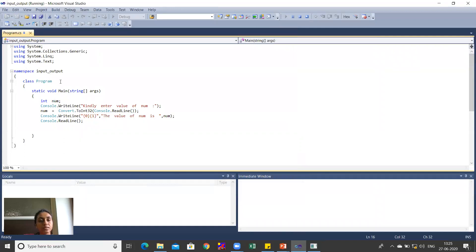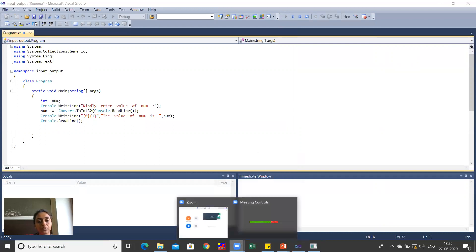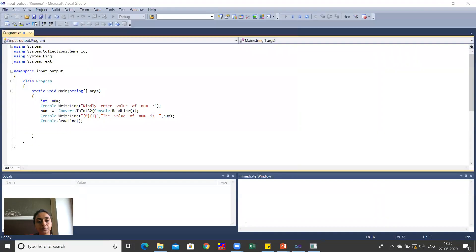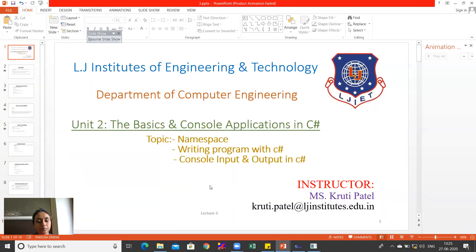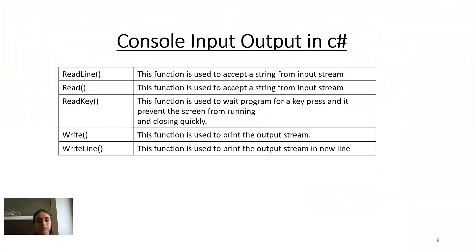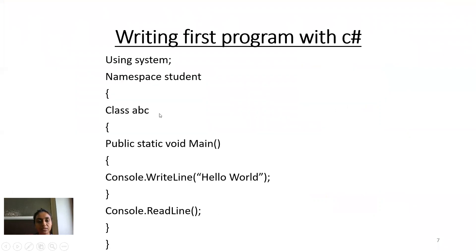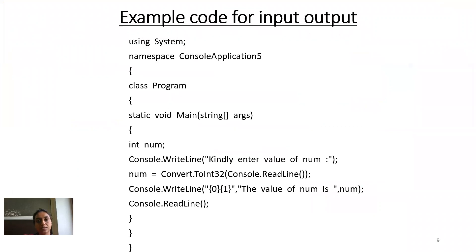So this is a program for basic input and output. We have seen the console input and output functions: ReadLine, Read, ReadKey, Write, and WriteLine. We have seen practically how to create a first program and how to write input/output code. Thank you everyone.